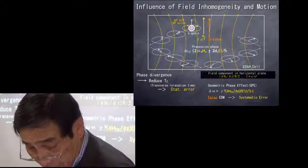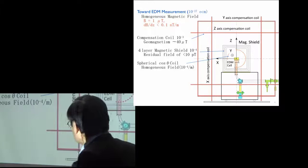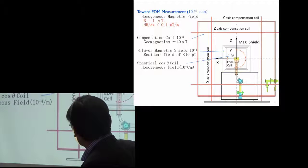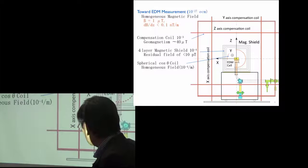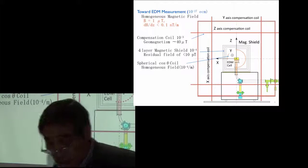So that the precise magnetic field is very important. Towards the measurement of the EDM of the order of 10 to the minus 27 cm, we need one microtesla weak magnetic field with a very small gradient.